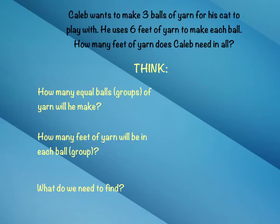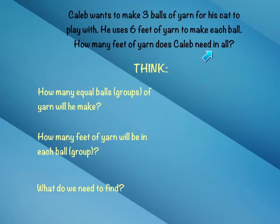So our first problem says: Caleb wants to make three balls of yarn for his cat to play with. He uses six feet of yarn to make each ball. How many feet of yarn does Caleb need in all? So we've got to take a couple of steps. First, we need to think: how many equal balls or groups of yarn will he make? How many balls does he want to make? So let's take a look.